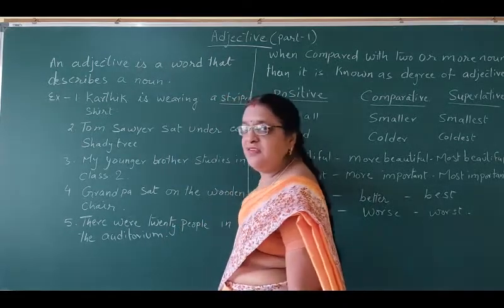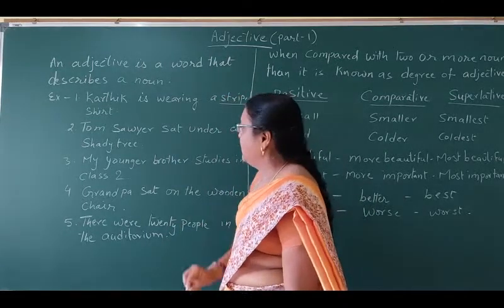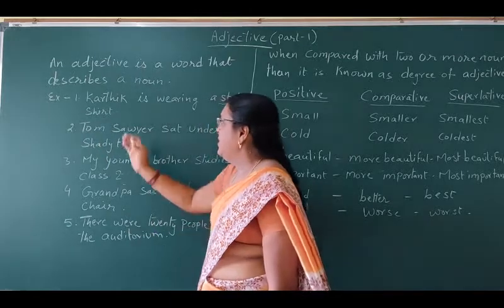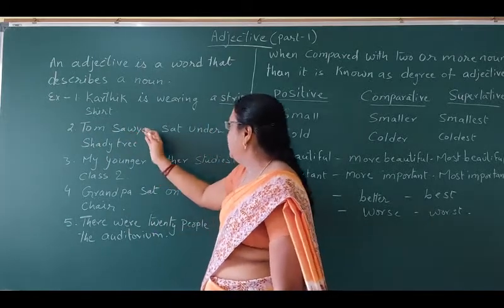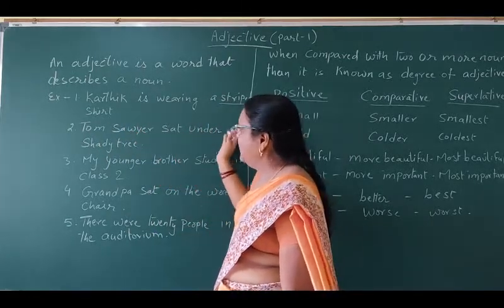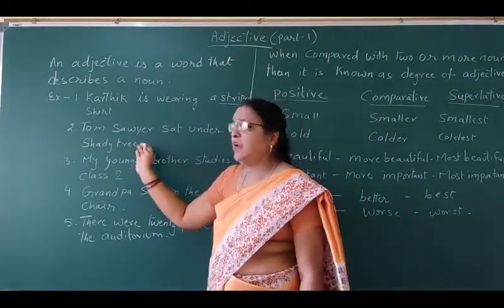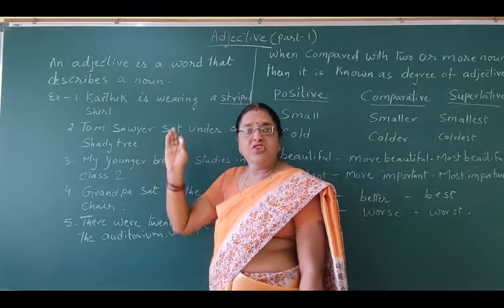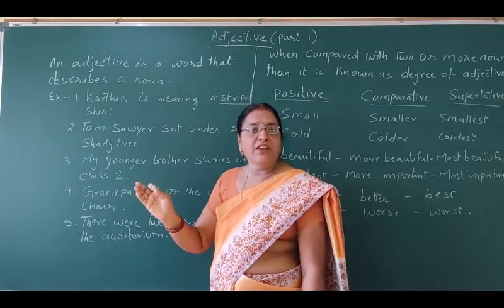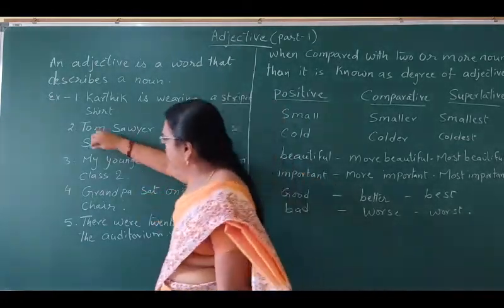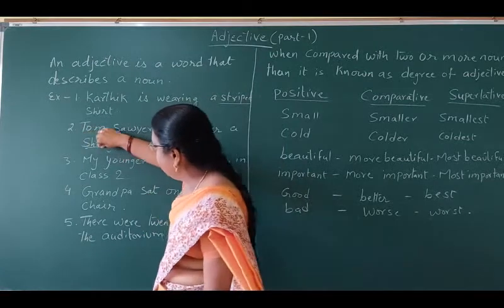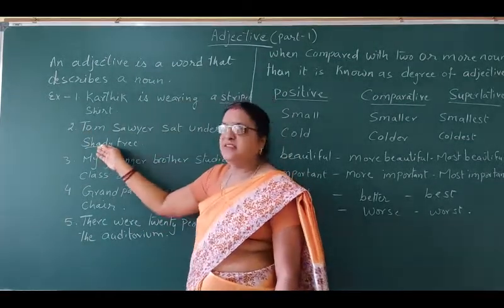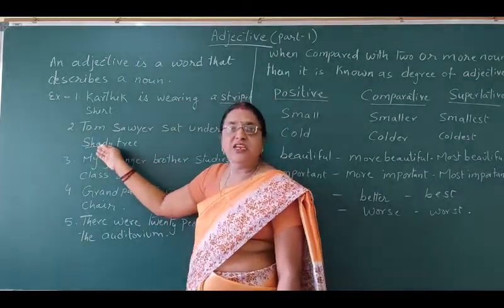Now, look at the second sentence. Tom Sewell sat under a shady tree. Here, tree is a noun. Which type of tree was it? It was a shady tree. So, the adjective here is shady.